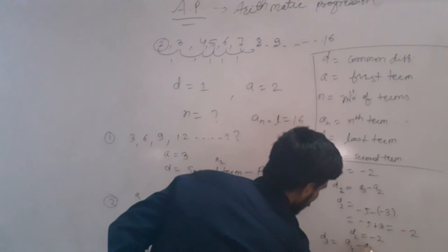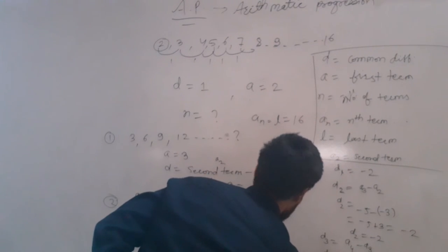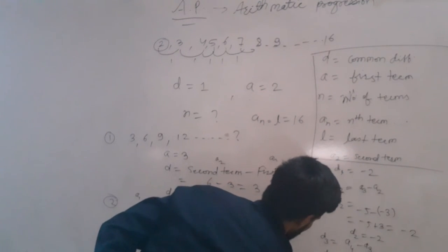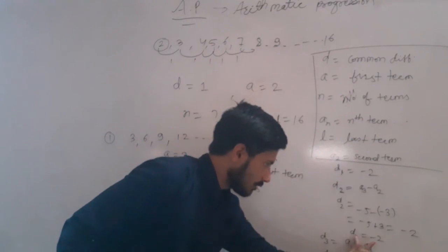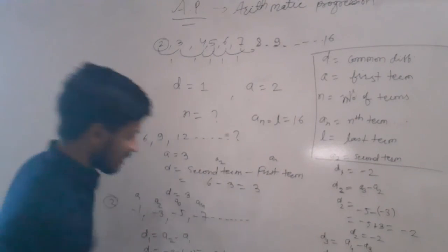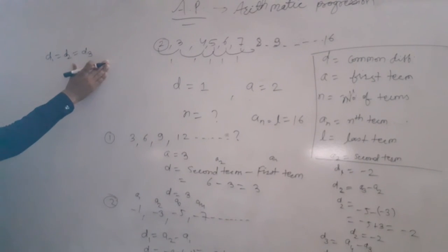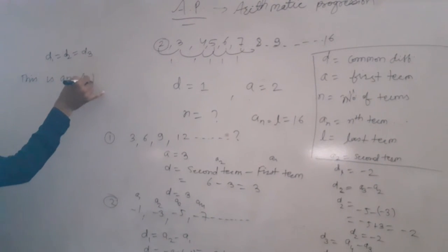Now D3 is A4 minus A3. A4 is minus 7 and A3 is minus 5. So D3 equals minus 7 minus minus 5, which is minus 7 plus 5, giving D3 equals minus 2. So D1 equals D2 equals D3, which means all common differences are equal, and we can say this is an AP.